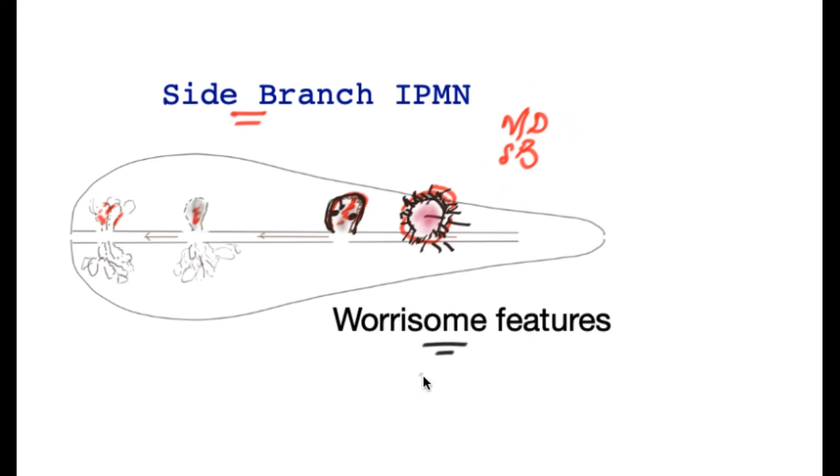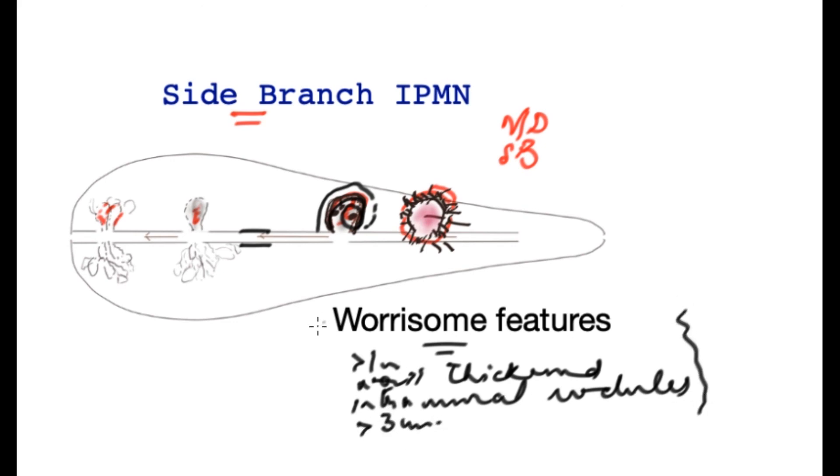Frequently features are seen on the scans that are called worrisome because they may denote either underlying malignancy or the potential for malignancy and these are greater than one centimeter of the main duct seen over here. If the wall of the side branch is enhancing, the wall is thick or if there are nodules called intramural nodules or if the size of this side branch is greater than three centimeters then these are features that are associated with a higher risk of malignancy.